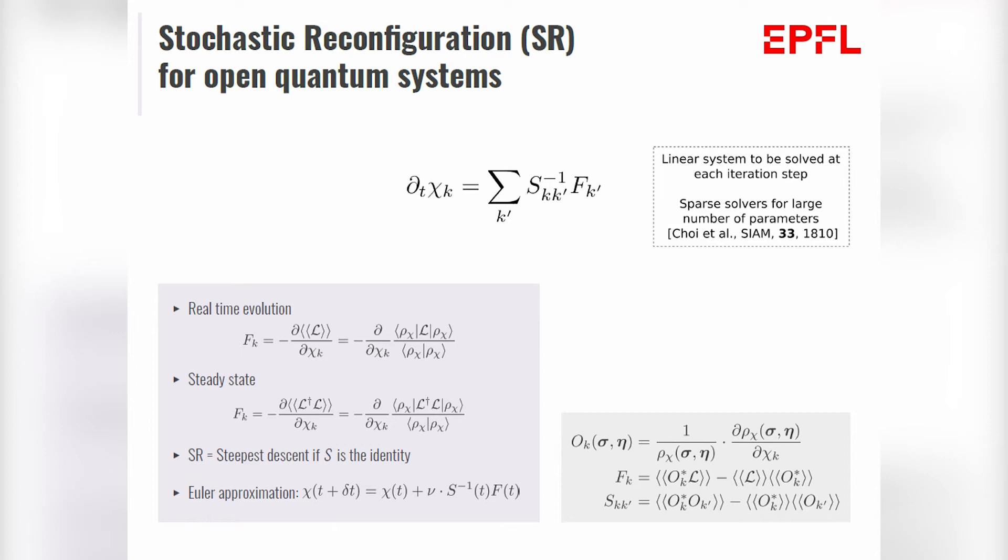To be even more intuitive, let's notice that if I choose the covariance matrix to be the identity, then this is just gradient of something, this is just steepest descent. Why we chose to use the stochastic reconfiguration is because it accounts for the correlation between the variables, so it's more robust against the local minima, and it has a faster convergence. About how we update these parameters, for real-time evolution you can do higher-order methods like fourth-order Runge-Kutta, otherwise you're good to go with an Euler approximation.